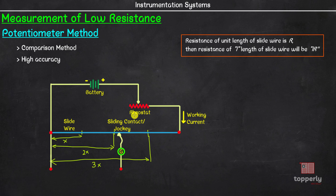The rheostat is used to control the working current in the circuit, and the jockey is used as a sliding contact between the galvanometer and the slidewire.